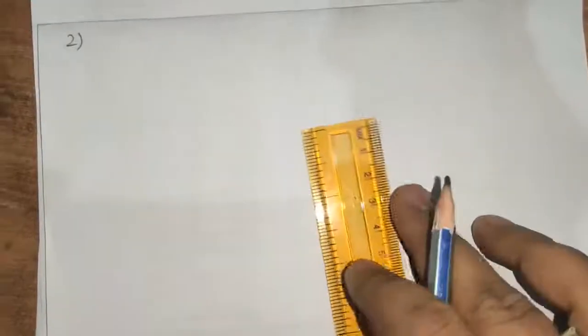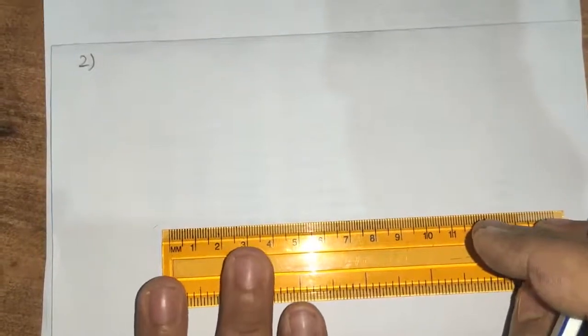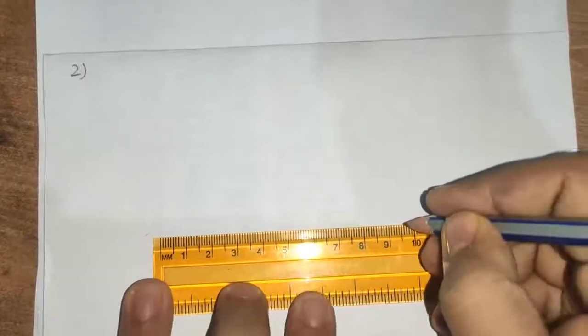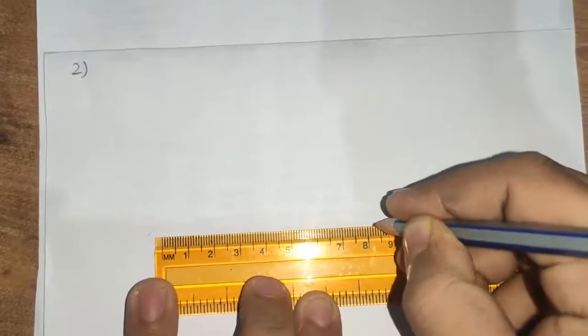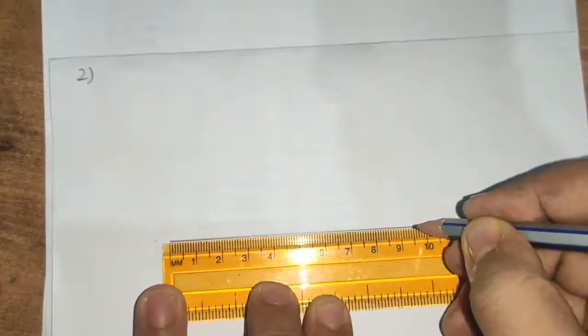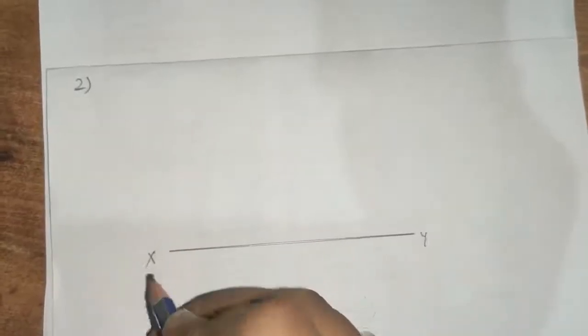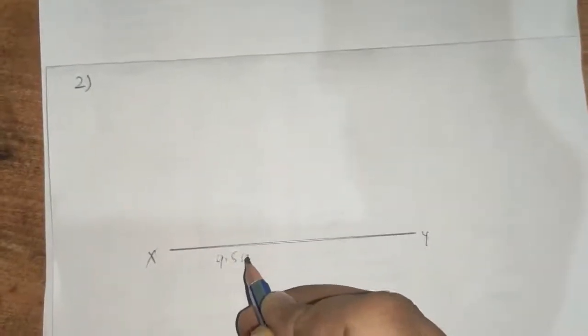First of all, in question number 2, you will draw a line which is 9.5 cm long. This is 9.5 cm from 0 to 9 and then 0.5 cm. You can name it any because name is not given. So here you can write Y or here you can write X and this is 9.5 cm.